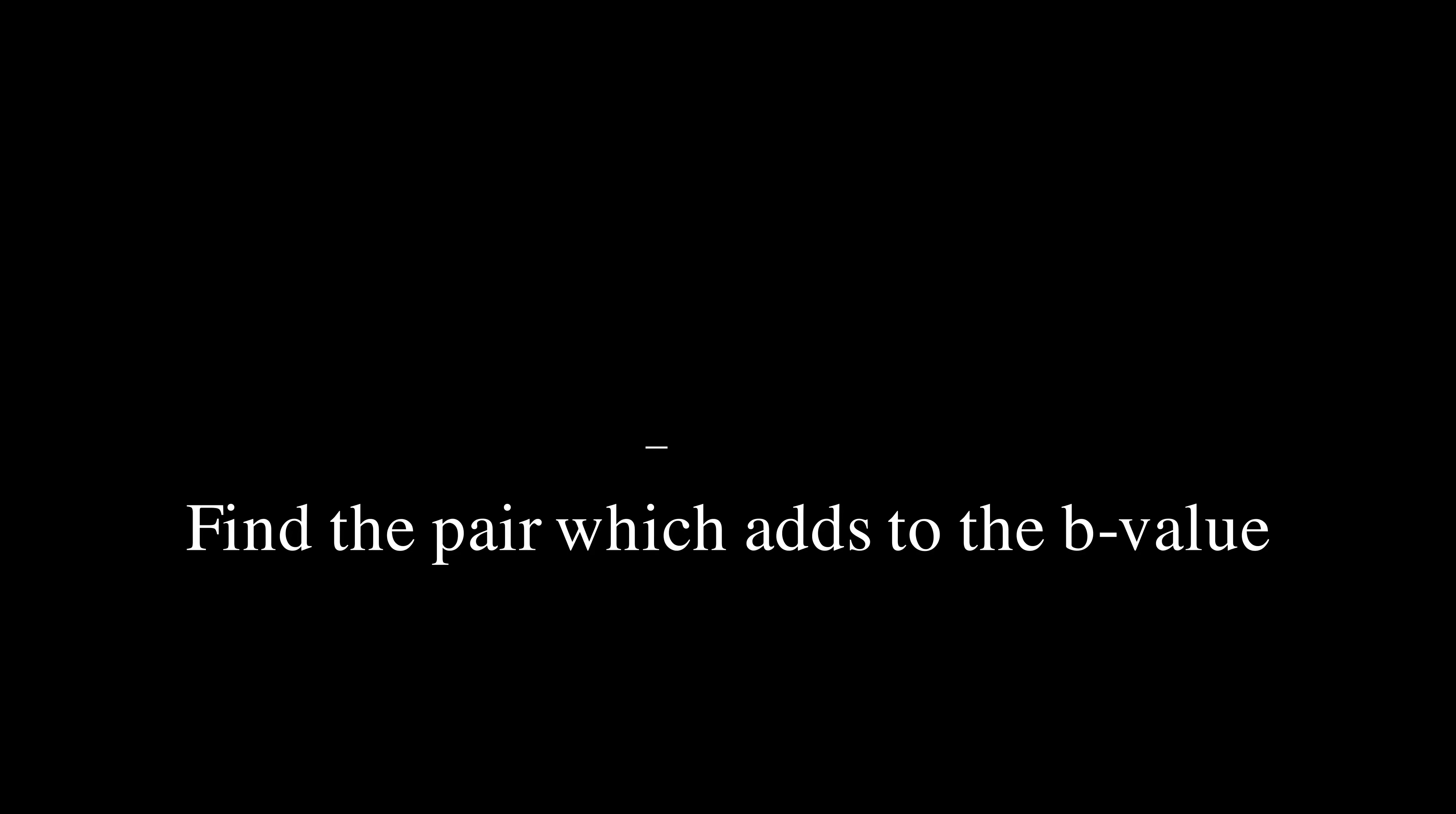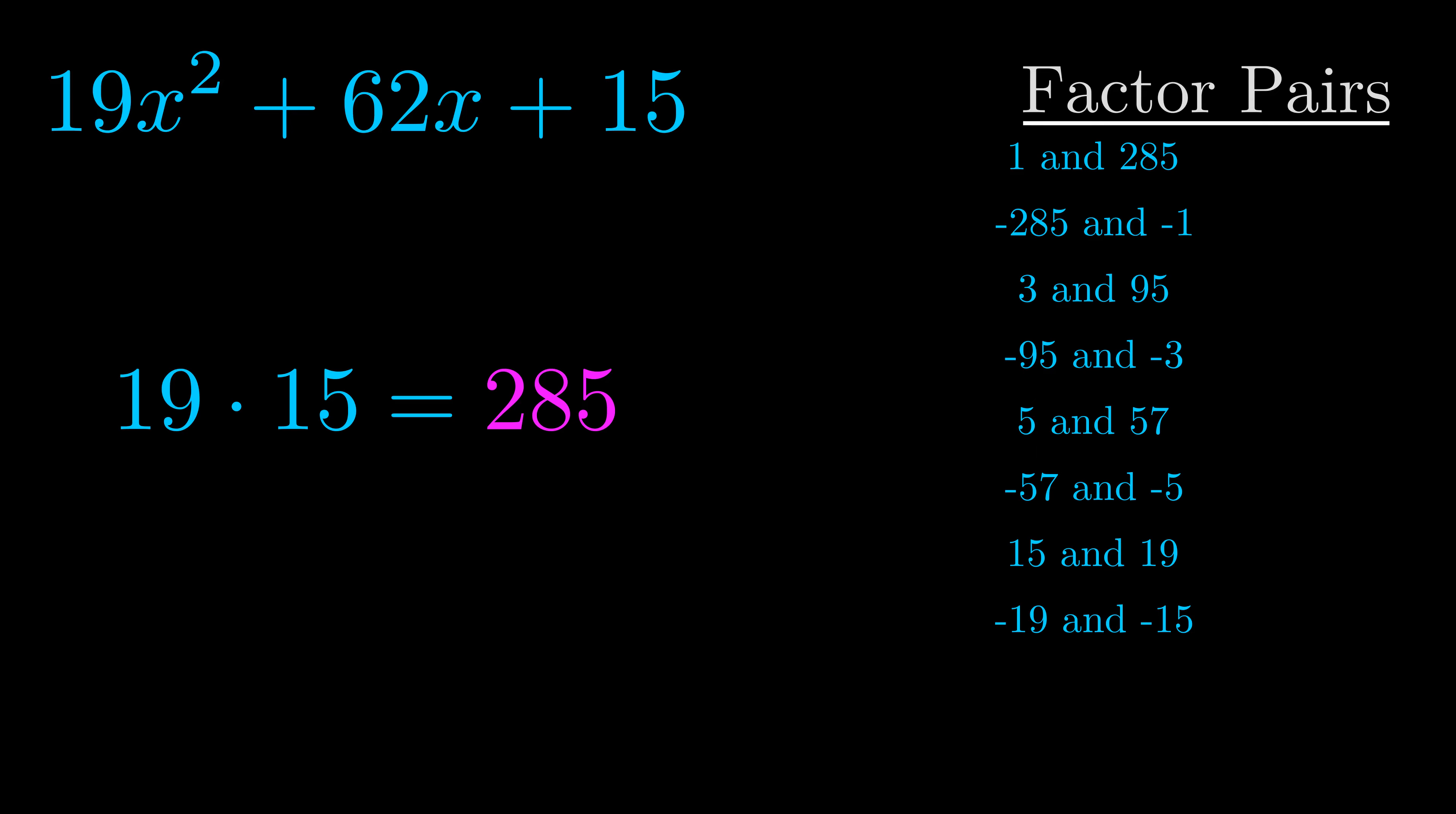The b value is the coefficient on the x term. That's the middle term, the one that we haven't done anything with yet. And really this is the only factor pair that we need.